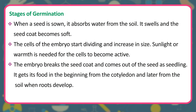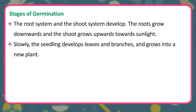Stages of germination: When a seed is sown, it absorbs water from the soil. It swells and the seed coat becomes soft. The cells of the embryo start dividing and increase in size. Sunlight or warmth is needed for the cells to become active. The embryo breaks the seed coat and comes out as a seedling. It gets its food in the beginning from the cotyledon and later from the soil when roots develop. The root system and shoot system develop — roots grow downwards and the shoot grows upwards towards sunlight. Slowly, the seedling develops leaves and branches and grows into a new plant.